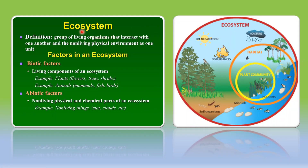Now let's learn about what is an ecosystem. An ecosystem is an interaction between living organisms and non-living components like soil, water, and air, which leads to the production of food and ultimately leads to the flow of the sun's energy. In an ecosystem, all the organisms in the biosphere are linked through a food chain.